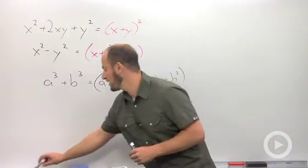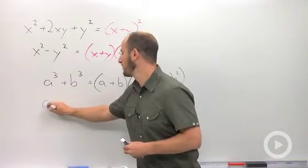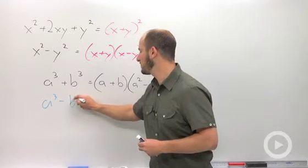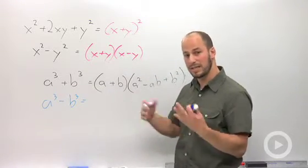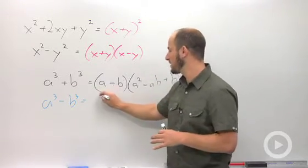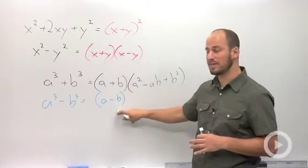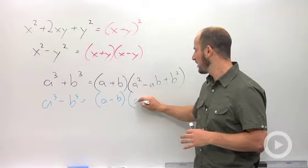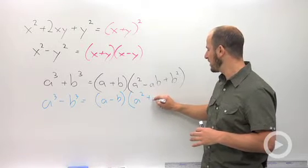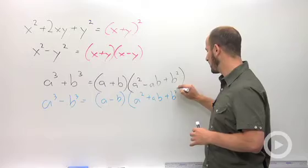This will also work for the difference of cubes: a cubed minus b cubed. How this works is almost identical formula, except instead of dealing with a plus b, we now deal with a minus b, and then it's a squared plus ab plus b squared.